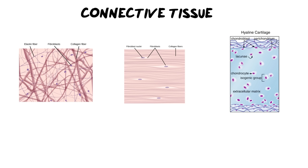Moving on to connective tissues. There are six major types of connective tissues, and essentially a connective tissue is there to support, stabilize, and protect your body's organs. To be a connective tissue, you need to be a group of cells surrounded by either a fluid or a matrix — which can be liquid, semi-liquid, or solid. Like the name gives away, connective tissues connect one tissue to another.